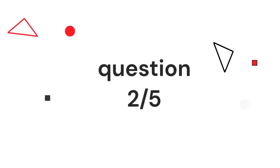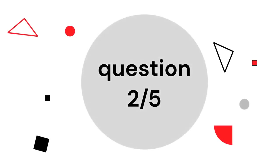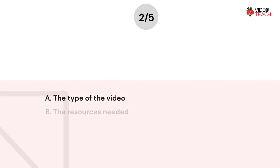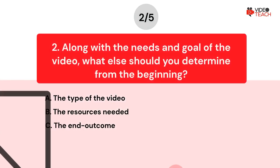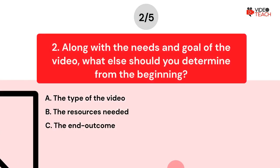Question number two. Along with the needs and goal of the video, what else should you determine from the beginning? Option A: The type of the video. Option B: The resources needed. Option C: The end outcome.